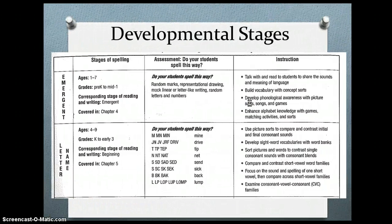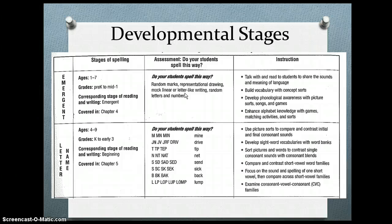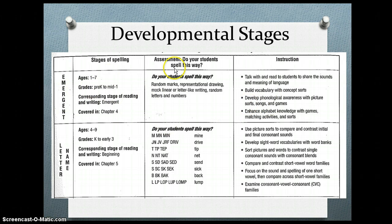Let's take a look at the developmental stages from Words Their Way. At the beginning we have the emergent stage, roughly ages one to seven, pre-K to mid-first grade. This is characterized by random marks, representational drawings, mock linear or letter-like writing, and random letters or numbers. Children are just beginning to learn letters, particularly letters in their own name. Toward the end of the emergent stage, they start to memorize some words and write those words repeatedly — cat, mom, love, dad. So if a student only knows those memorized words and other attempts are spelled incorrectly, that may be indicative of the emergent stage.